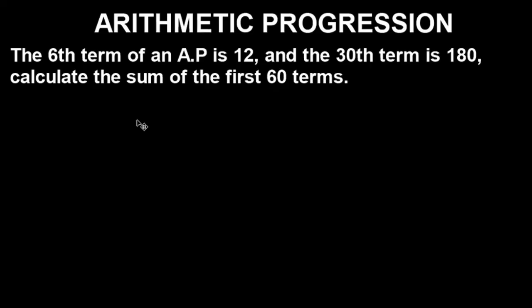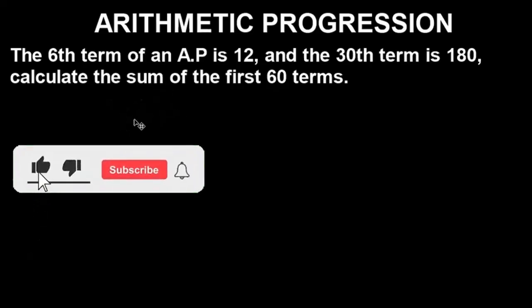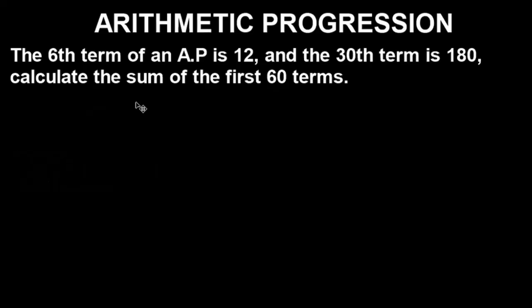You will see these in your exams or tests, any test you're writing. It's important you get the idea first so you can replicate it for others. The question says: The 6th term of an AP is 12 and the 30th term is 180. Calculate the sum of the first 60 terms.